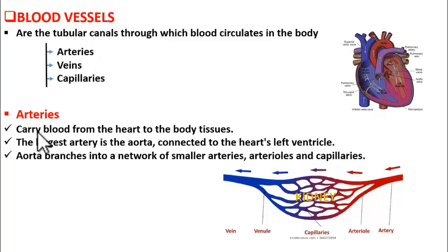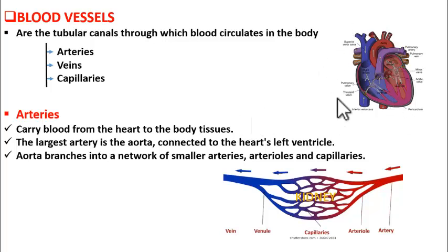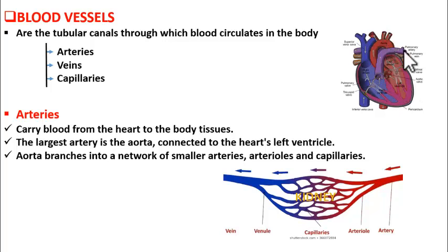Arteries are the blood vessels that carry blood from the heart to body parts. So arteries arise from the heart and go to body parts. The two arteries connected to the heart are the pulmonary artery, arising from the right ventricle, and the aorta, arising from the left ventricle. Of all the arteries of the body, the aorta is the largest one.